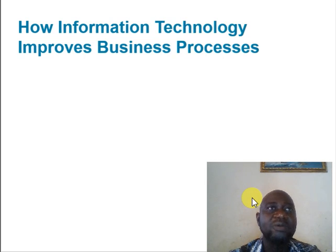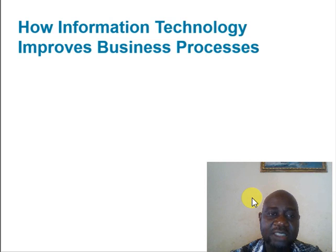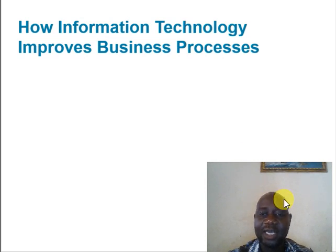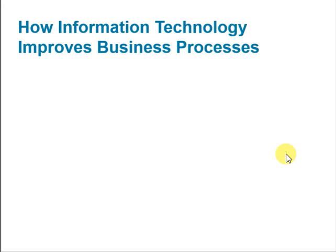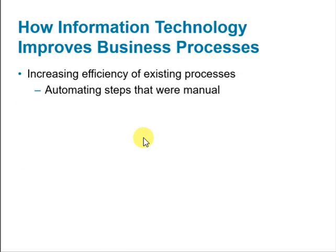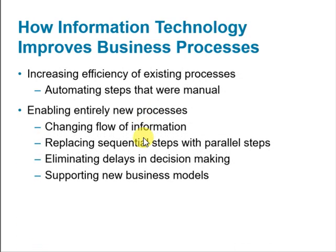Information technology can have an incremental impact on business processes, changing the steps used to carry out a particular process — for instance, virtualizing some steps by putting them online. Alternatively, information technology can improve business processes by completely transforming them. So we can say IT improves businesses in two ways: an incremental impact by automating steps that were traditionally manual, or enabling an entirely new process by changing the flow of information, replacing sequential steps with parallel steps, eliminating delays in decision making, and supporting new business models.